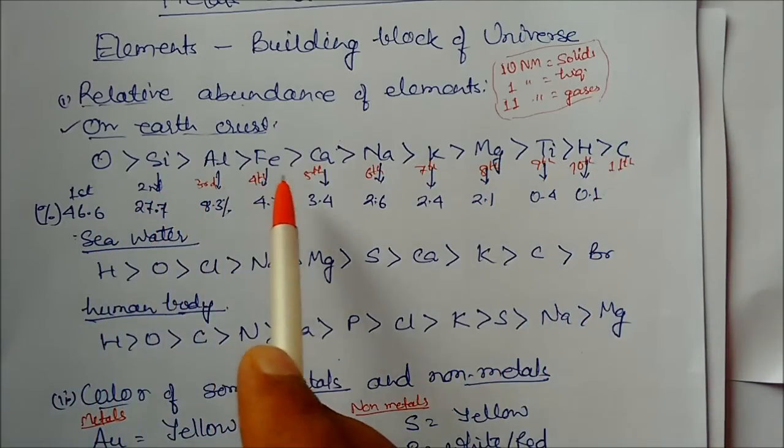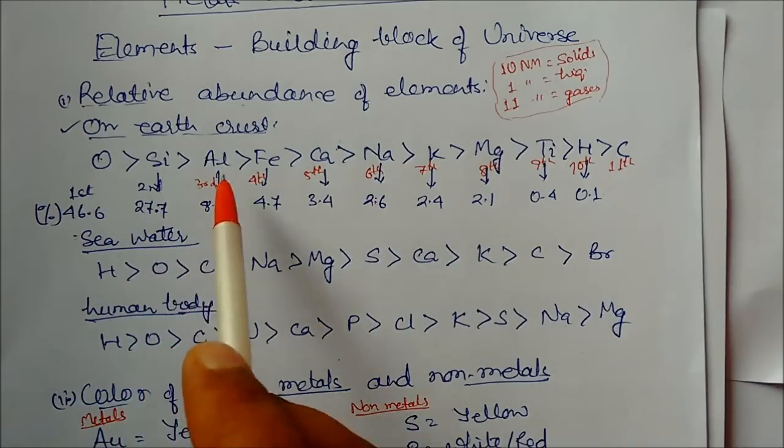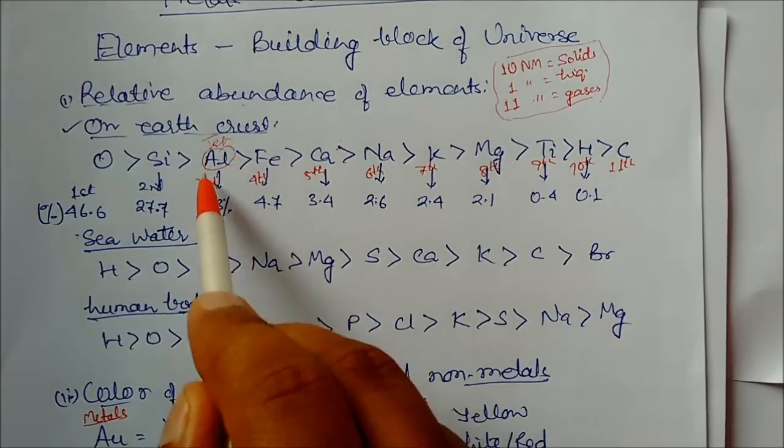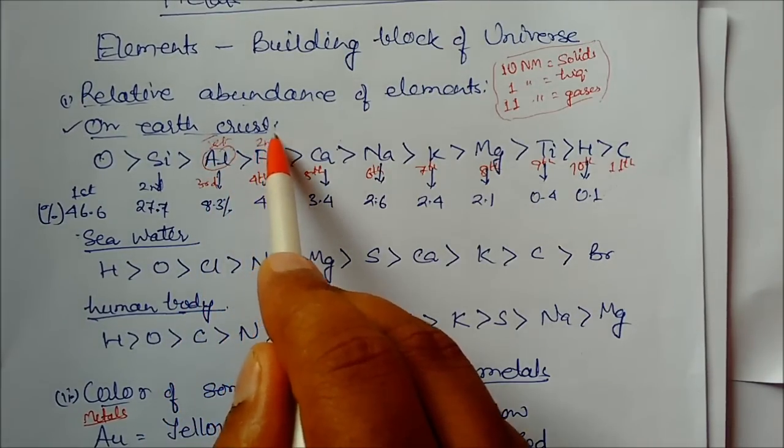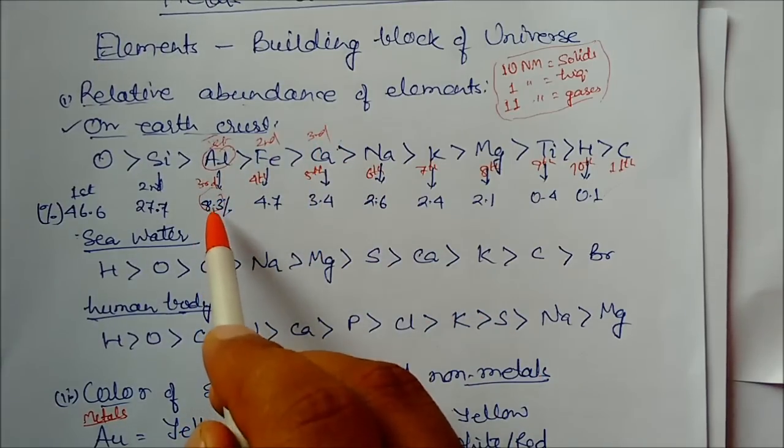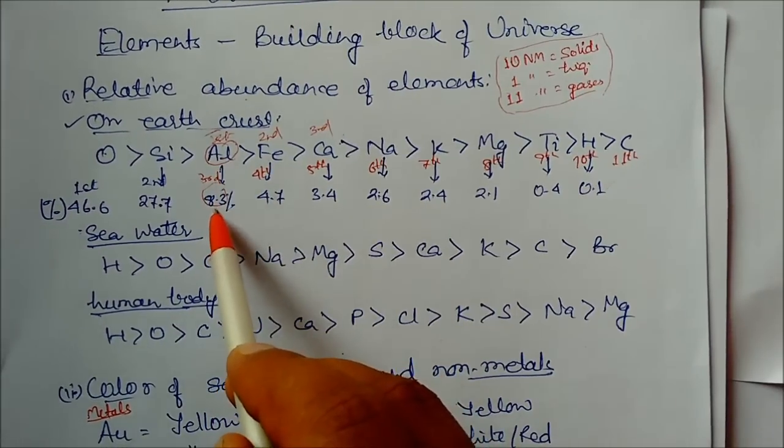These are concentrations. In metals, first is aluminum at 8.3%, then second is iron, and third is calcium. This is asked in examinations: which is the most abundant metal found on Earth's surface? Aluminum.